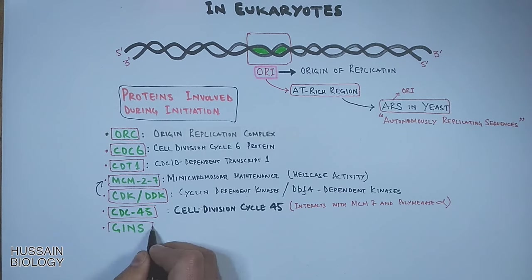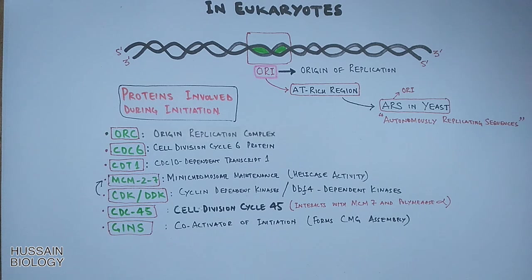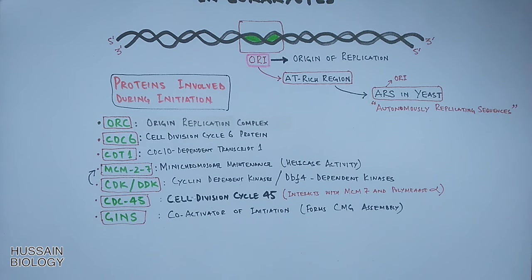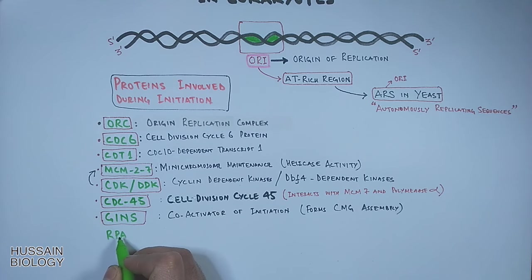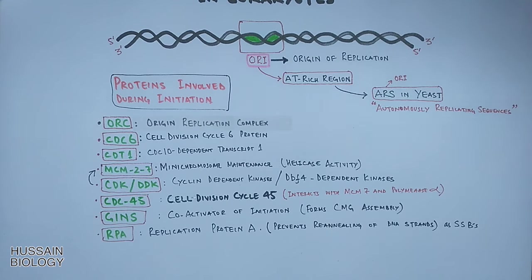Then there are gins. gins is a coactivator of DNA initiation, forms CMG assembly: cdc45, mini chromosome maintenance, and gins. Furthermore we have RPA protein, replication protein A. It prevents the annealing of DNA strands once separated. These are like SSB proteins of prokaryotes.